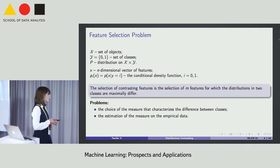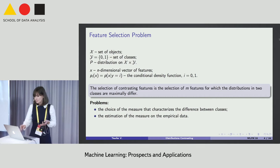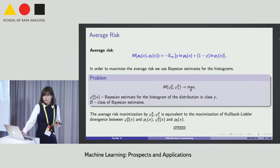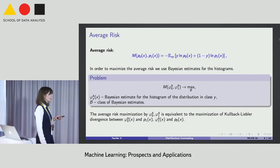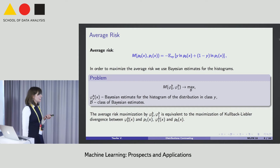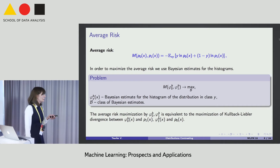I face the following problems: to choose a measure that characterizes the differences between the classes, and the problem of estimating this measure on empirical data. As the measure, I propose to use the function of the average risk — the mathematical expectation of the loss function. To maximize this average risk, I use the class of Bayes estimates. The maximization of this risk in this class is equivalent to maximization of the Kullback-Leibler divergence between the class density estimations.